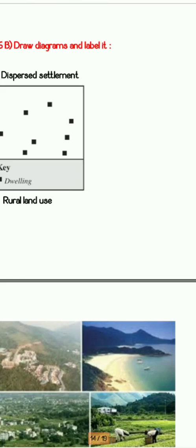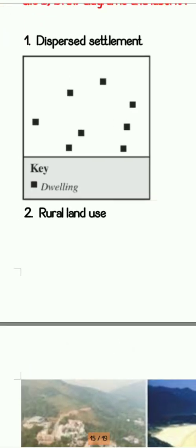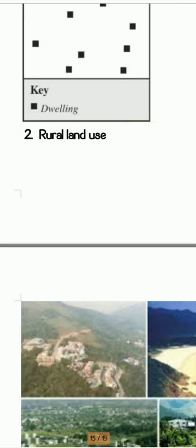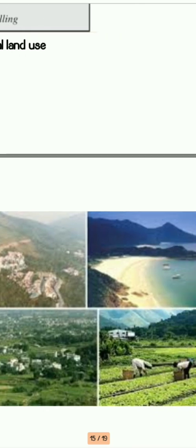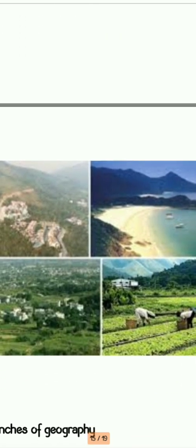Next is dispersed settlement. You can draw it in this manner — there should be a large gap between the two houses. The gap should be very much; it should look scattered and dispersed. These are the dwellings you can show, and you can also draw some small houses and huts.